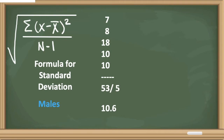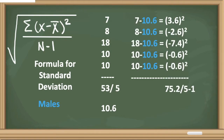Just like before, we'll take this average of 10.6 and subtract it from every number in our distribution: 7 minus 10.6, 8 minus 10.6, 18 minus 10.6, 10 minus 10.6, and 10 minus 10.6. That gives us negative 3.6, negative 2.6, 7.4, negative 0.6, and negative 0.6. With the squared values totaled, we get 75.2.